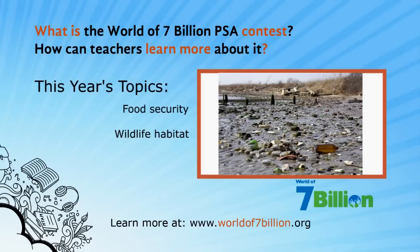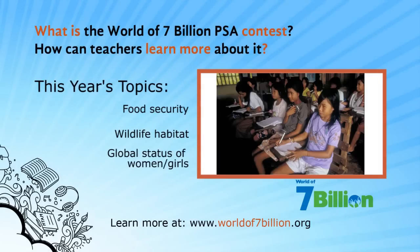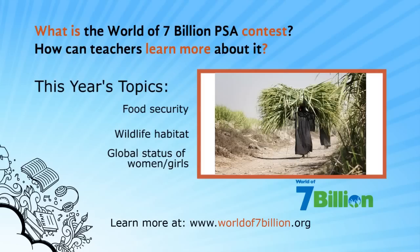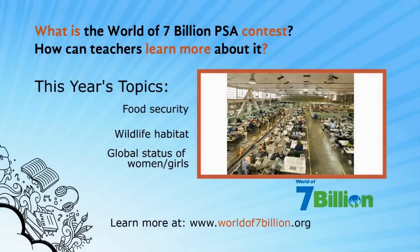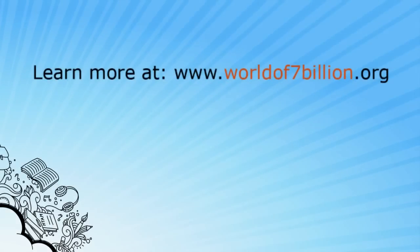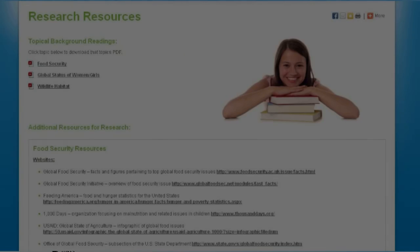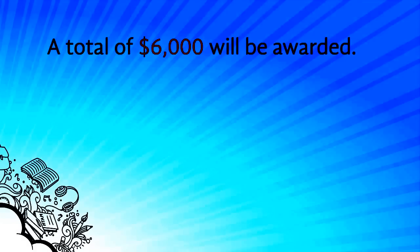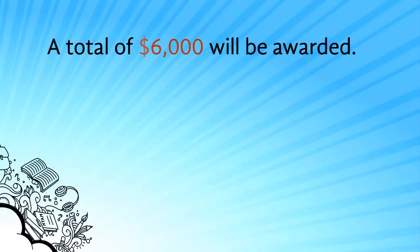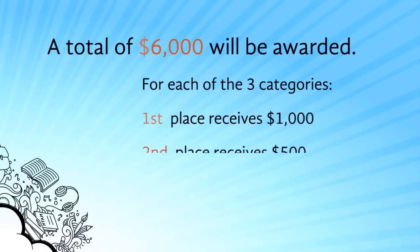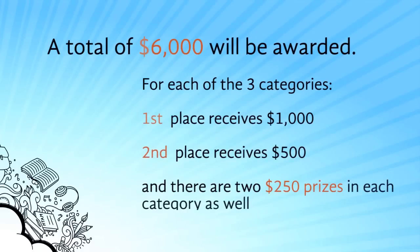The third topic, great for the social studies classroom, is gender issues — the status of girls and women around the world and what that has to do with population growth. How does the role of women affect the number of children they have and the opportunities available to them? We provide background readings on the contest website, worldof7billion.org. There are $6,000 worth of prizes: a first prize of $1,000, second of $500, and two of $250 for each of the three issue area categories.